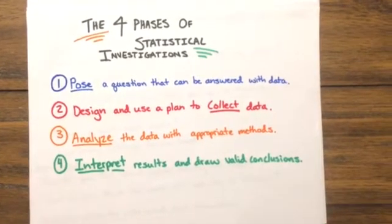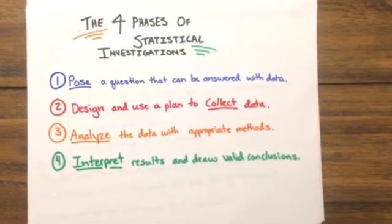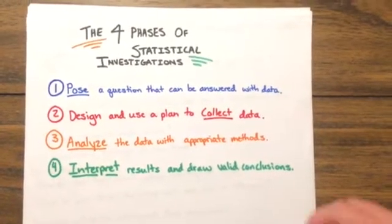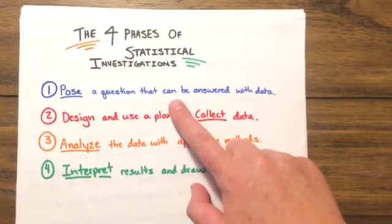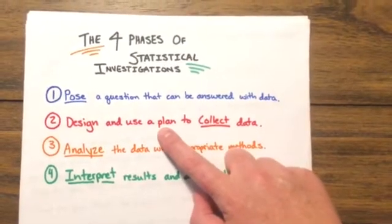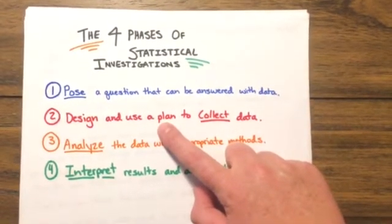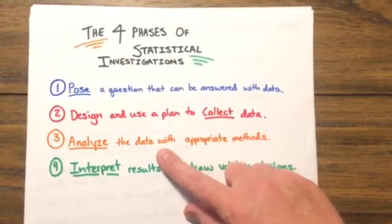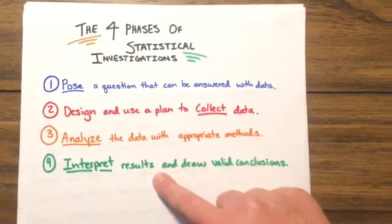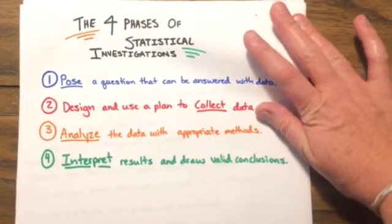In this video let's talk about the four phases of statistical investigation. The first phase is to pose a question that can be answered with data. The second is to design and use a plan to collect data. The third is to analyze the data with appropriate methods, and the fourth is to interpret results and draw valid conclusions.